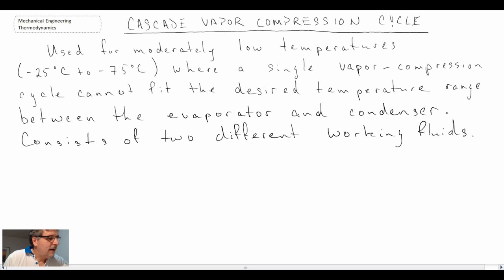The Cascade Vapor Compression Cycle is one whereby we have two different working fluids. Essentially what we have is two refrigeration systems, one sitting on top of another. The reason why we have two working fluids is to enable us to get to lower temperatures than we could get to with just a single working fluid. Consequently, the fluids would be selected carefully ensuring that we can get down to lower temperatures.